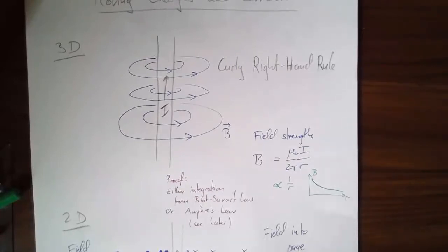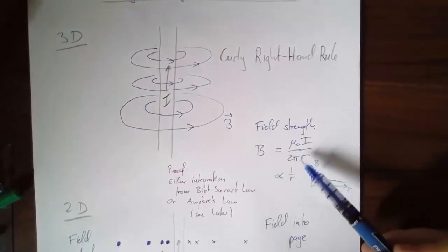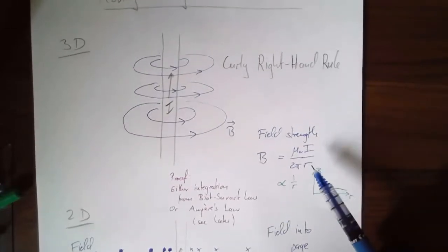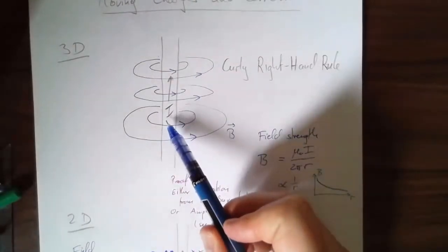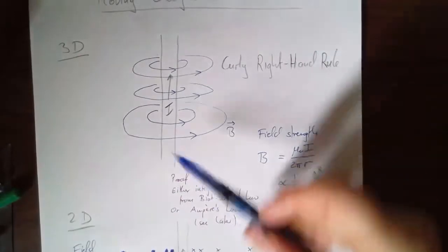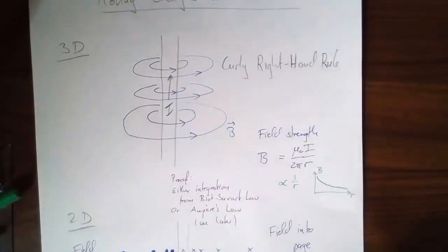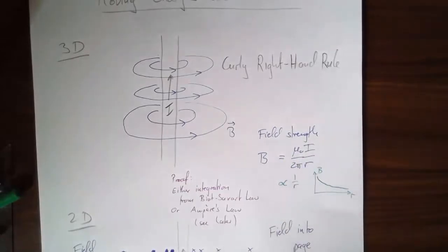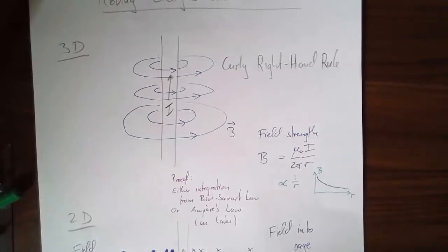Triple the distance, a third of the field strength, and so on. Later you'll be able to prove this from the Biot-Savart law, which gives us the magnetic field due to a single moving charge. We can pretend we're building this wire from a large number of small moving charges. There's also a better — meaning much more convenient and shorter — method, and that is using Ampere's law. I'll talk about that somewhere else.